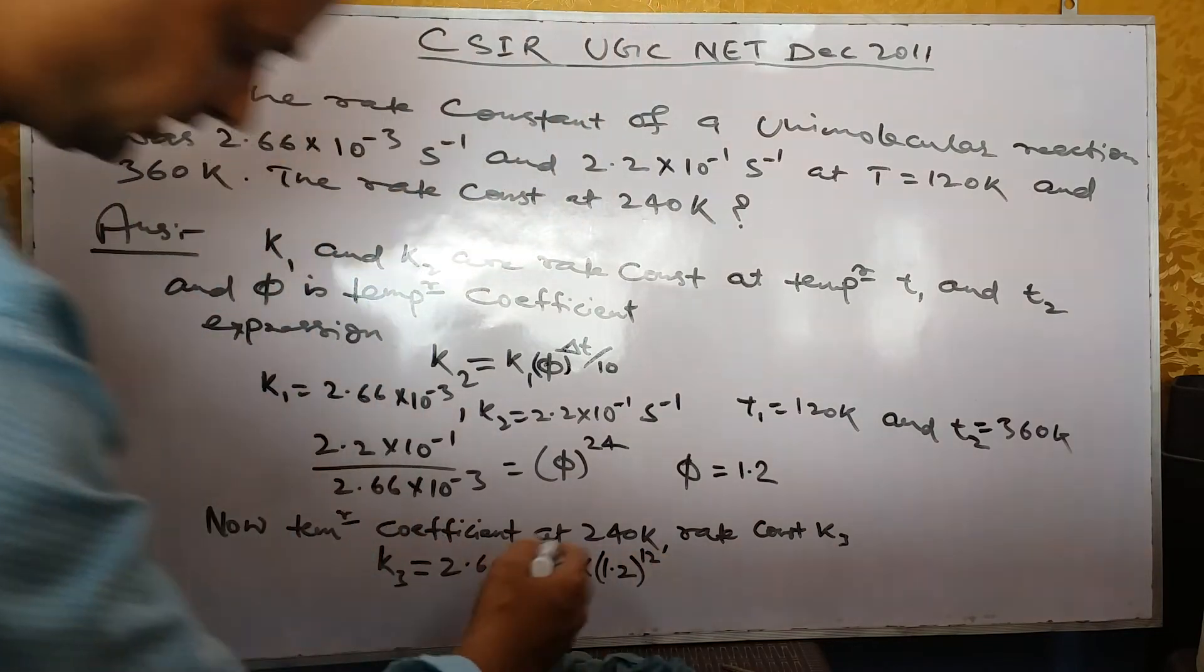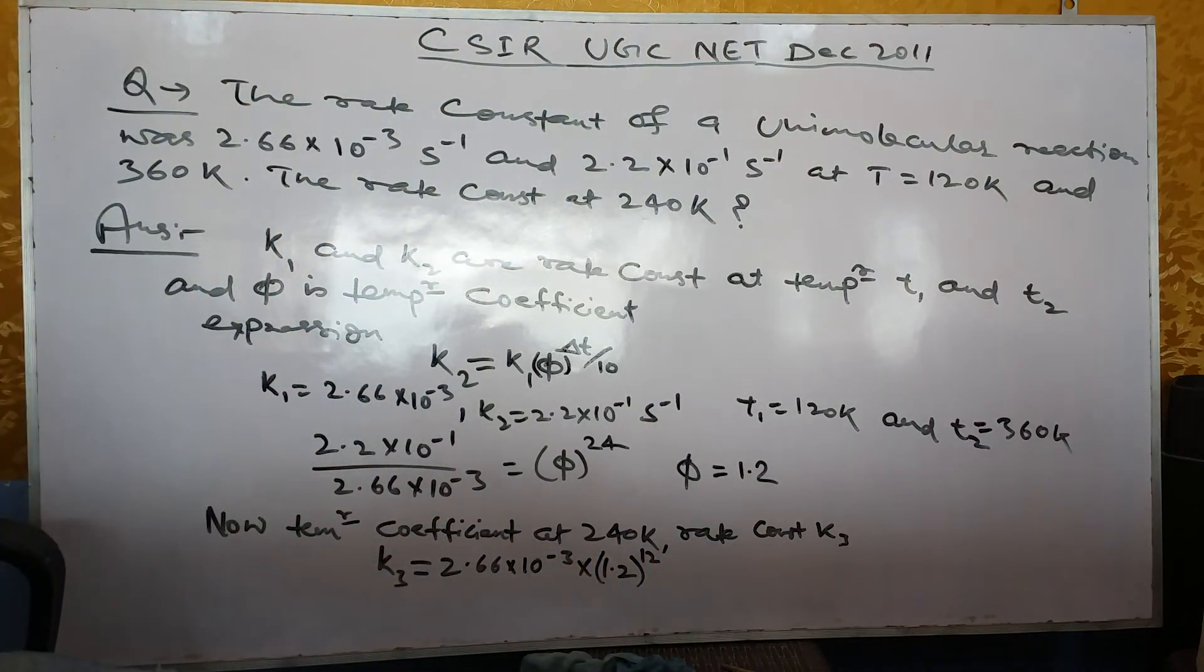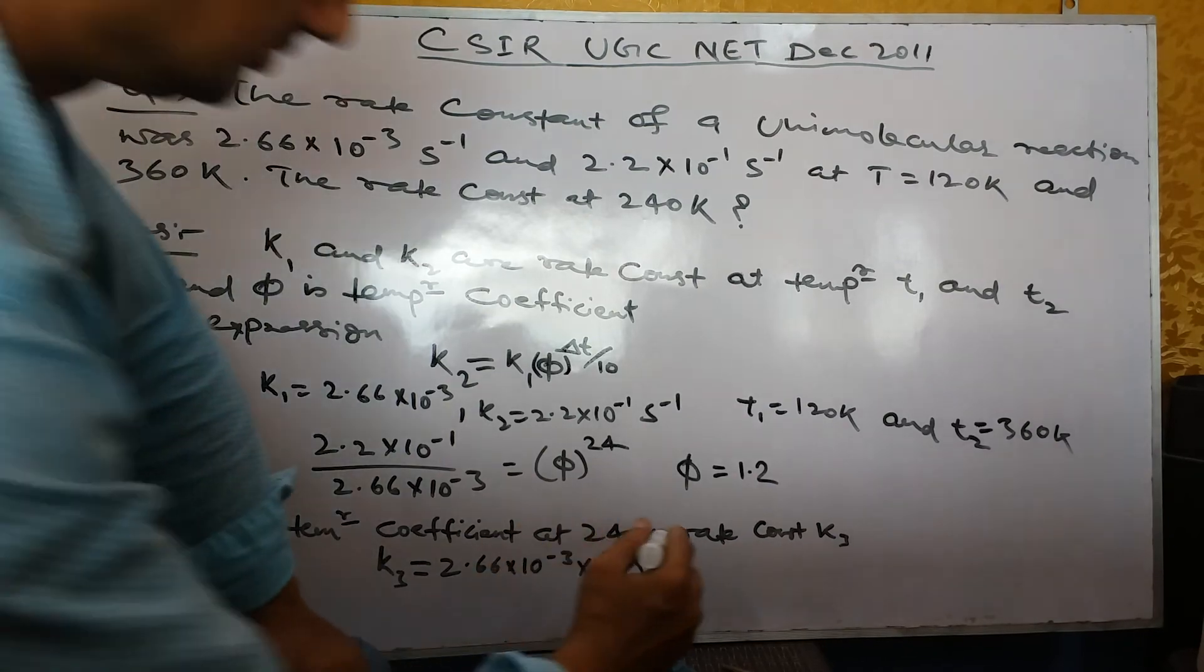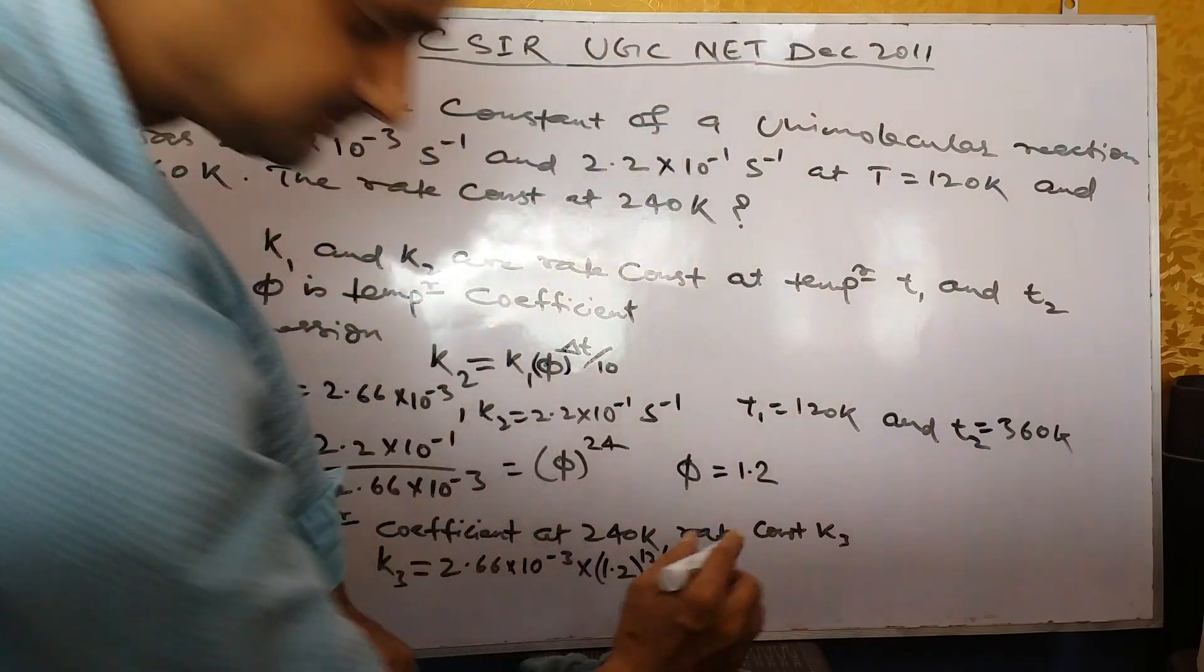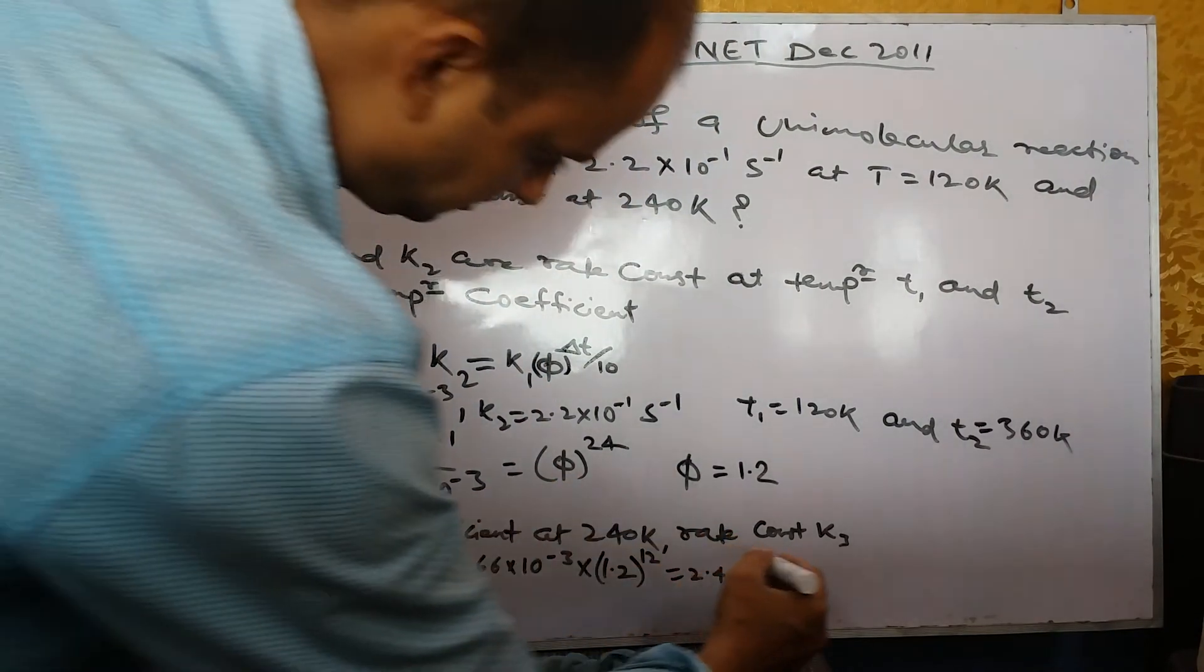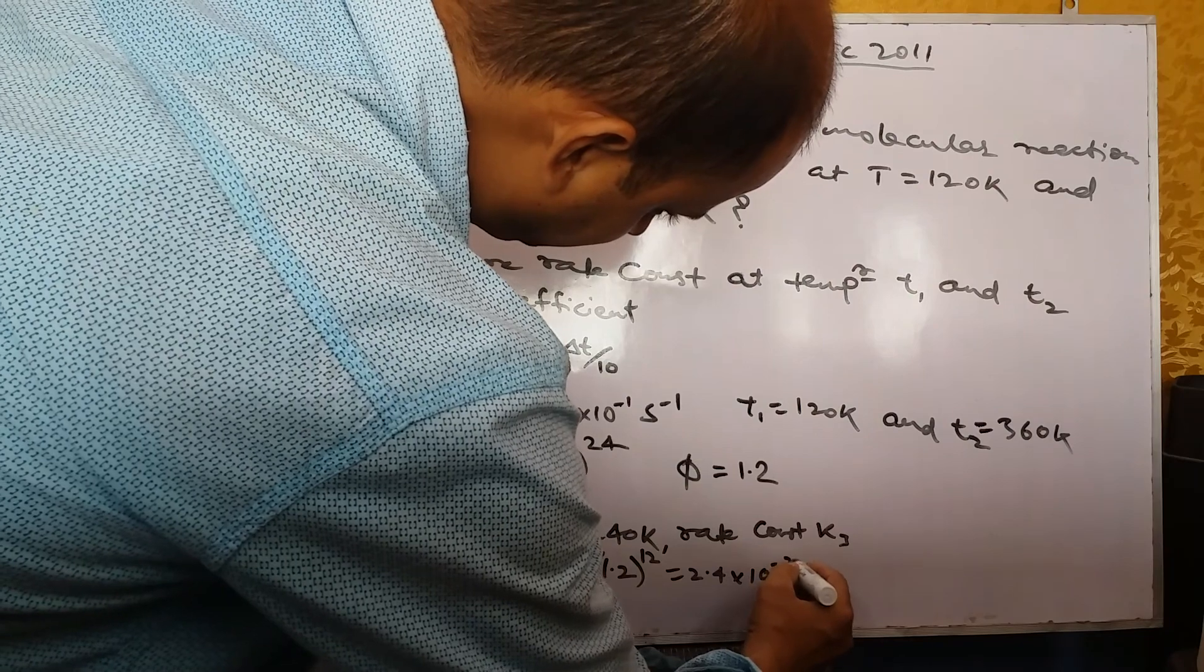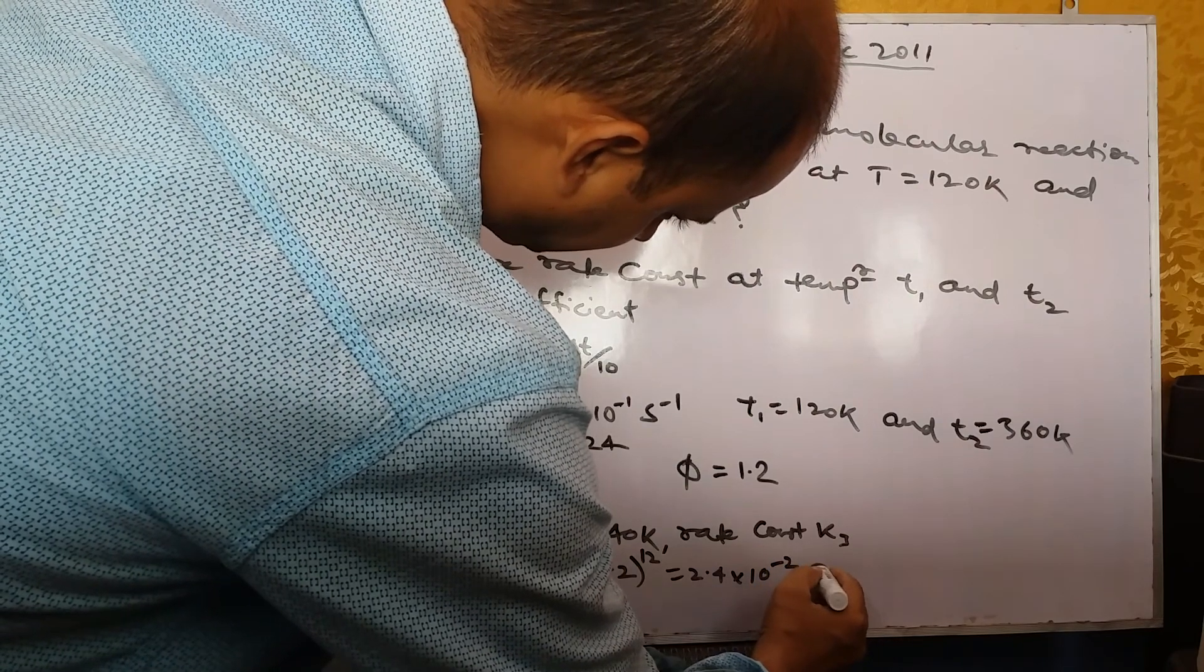Solve this data, you will obtain 2.4 × 10^-2 per second.